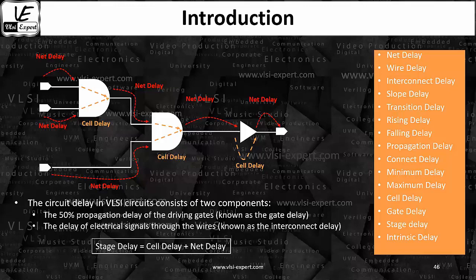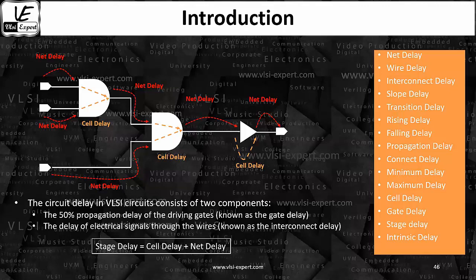There are different nomenclatures for delay types. Net delay, wire delay, and interconnect delay are all the same thing — different names for the same type of delay. Similarly, slope delay, transition delay, rise delay, and falling delay are almost the same thing. Transition delay is basically the delay to change state — from zero to one or one to zero — that transition of state is the transition delay. Then there is propagation delay, connect delay, minimum delay, and maximum delay.